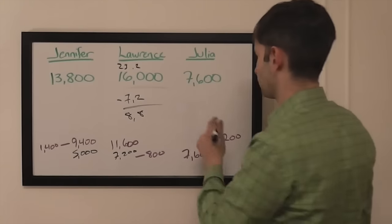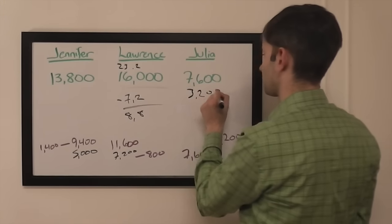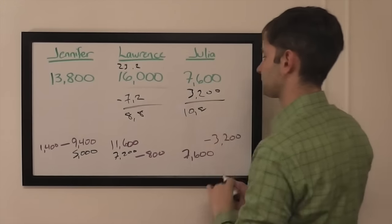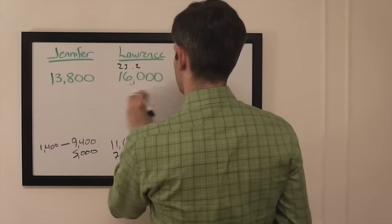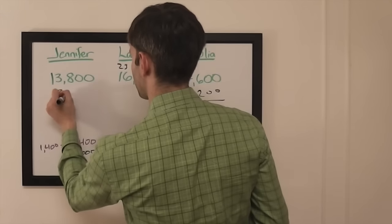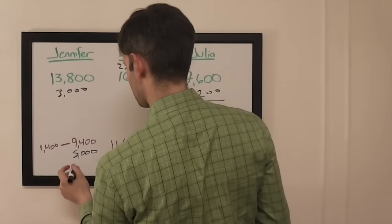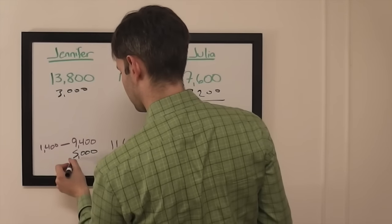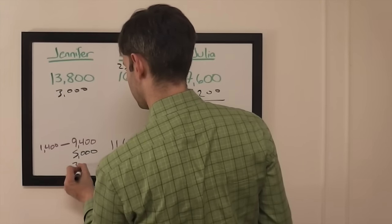They're separated by 2,200, so that makes sense. If Julia goes for this 3,200 amount she's going to have 10,800. So to stay above that Jennifer can wager up to 3,000 and that will put her at Julia.